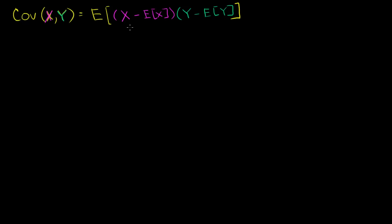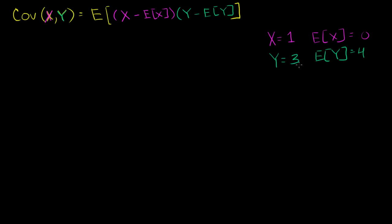Let's say that x is above its mean when y is below its mean. So let's say one instantiation of the random variables — you sample once from the universe — and you get x equal to 1 and y equal to 3. And let's say you knew ahead of time that the expected value of x is 0 and the expected value of y is 4. So we have 1 minus 0, which is 1, times 3 minus 4, which is negative 1. So you get 1 times negative 1, which is negative 1.